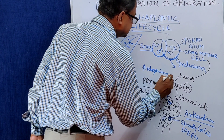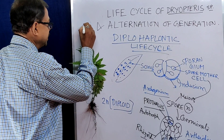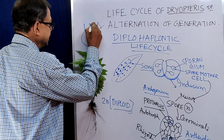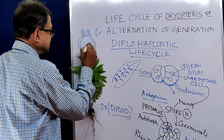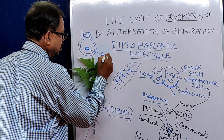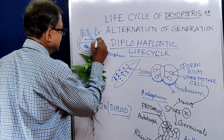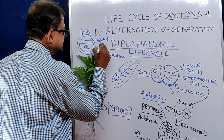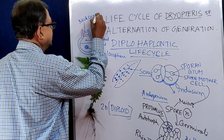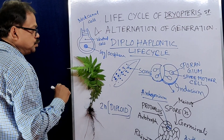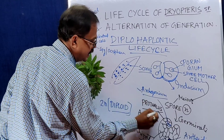The archegonium is the female reproductive part. If we draw the diagram of the archegonium, we can find this type of structure — it is the archegonium. Here there is an egg or oosphere, one ventral canal cell, and neck canal cells. This is the structure of the archegonium, which is present in this portion of the prothallus.